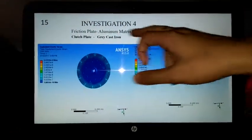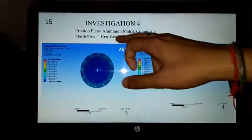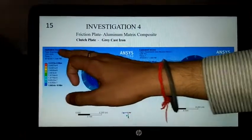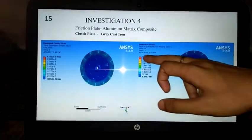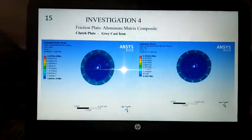Investigation 4: friction plate is aluminum matrix composite and clutch plate is grey cast iron. Elastic strain maximum is 4.33e-6 and equivalent stress maximum is 5.1564e5.